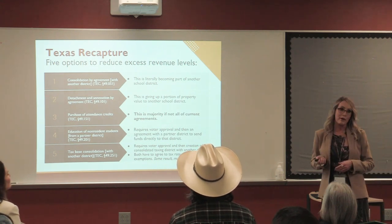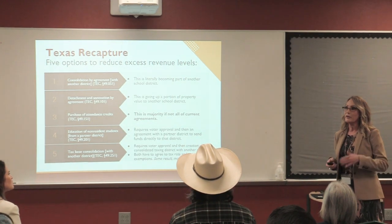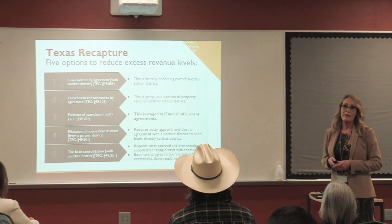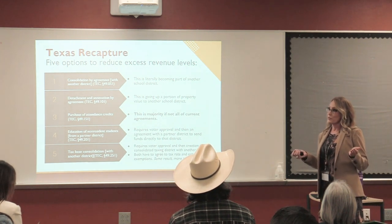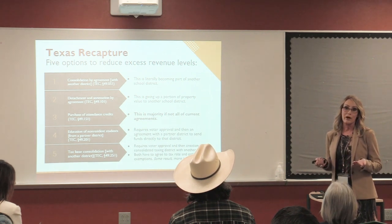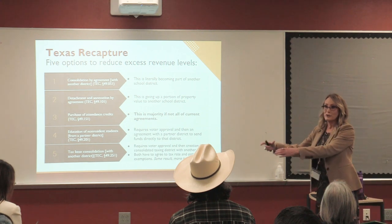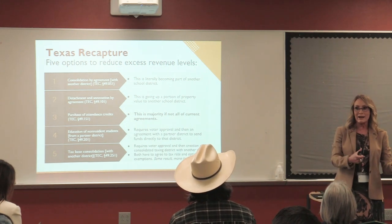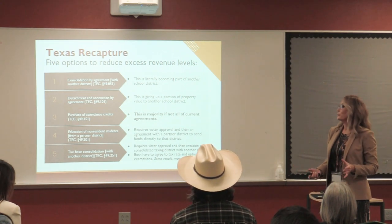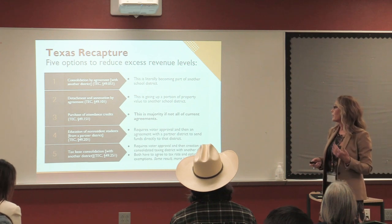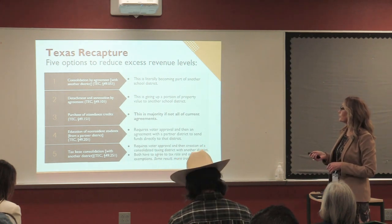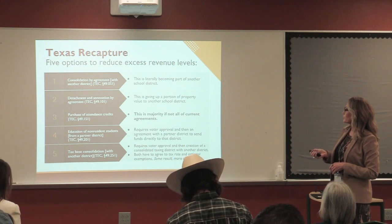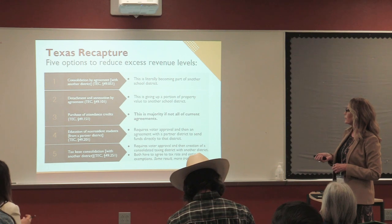Detachment almost happened in Houston ISD when they had to hold an election for option three. They played chicken with the state and told voters to vote no. Voters voted no. TEA then said they would take the Galleria and give its taxing base to another school district. Houston said, okay, you're serious — they did another election and got it passed. TEA will detach your property to reduce your excess revenues if you don't do it on your own. So virtually every recapture district uses option three: purchase of attendance credits.